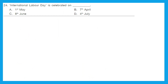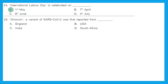Question 24: International Labor Day is celebrated on which date? International Labor Day is celebrated on the 1st of May every year around the world, and it is celebrated to raise awareness of the rights of working people and to protect them from exploitation. The right answer is option A — 1st May. Question 25: Omicron, a variant of SARS-CoV-2, was first reported from South Africa in November 2021.